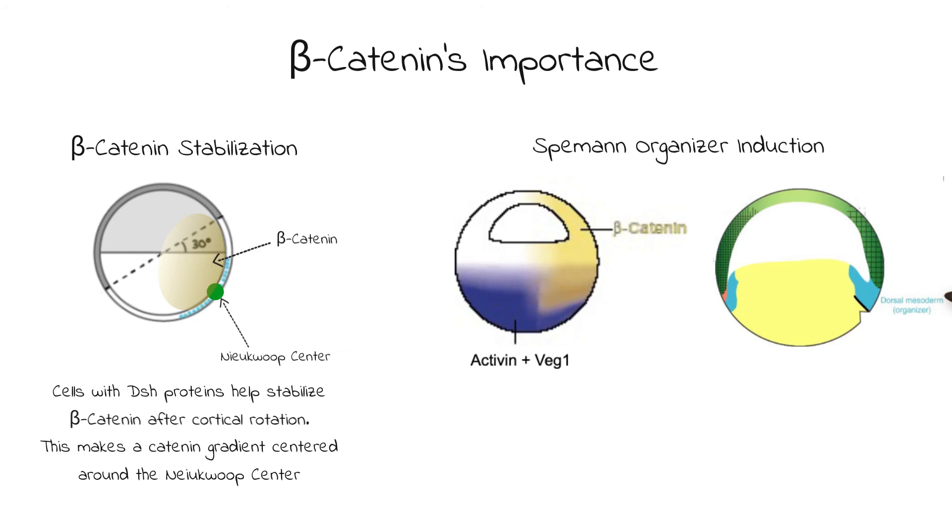A combination of high beta-catenin, high VEG-T, and high activin are all needed to induce the creation of the Spemann-Mangold Organizer. The location of this high concentration area is right around the Nieuwkoop center, and as a result, the dorsal lip begins to form at the beginning of gastrulation exactly at that spot.